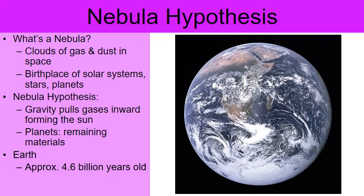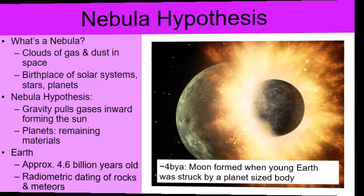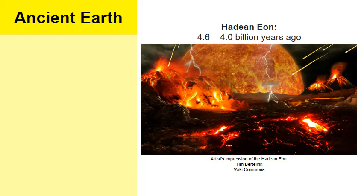When it comes to Earth, we can say it is approximately 4.6 billion years old, and we know that from radiometric dating of rocks and meteors that have landed on Earth — by examining the decay rate of isotopes in rocks. As a fun side note, it's estimated that around 4 billion years ago the Moon formed when ancient primitive Earth was struck by a planet-sized body, and that collision resulted in the formation of our Moon.